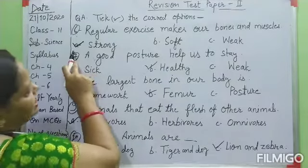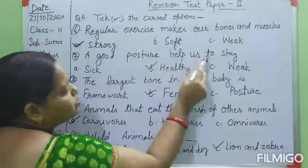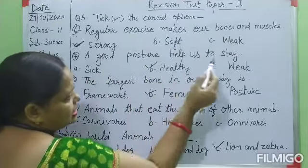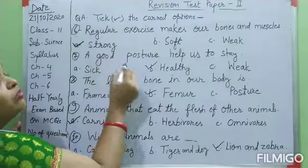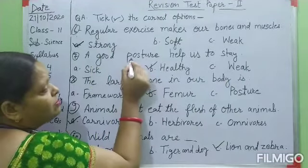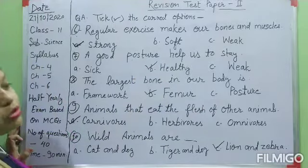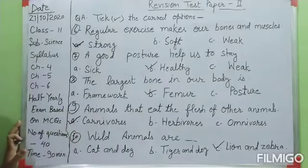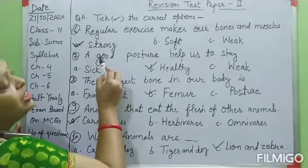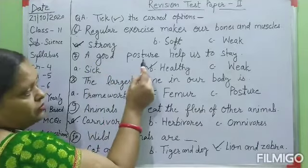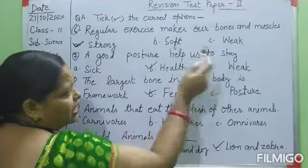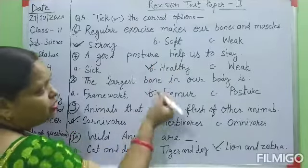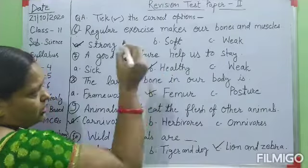Question number seven: good posture helps us to stay — A: sick, B: healthy, C: weak. What is the meaning of 'posture'? Posture is the position when we are running, walking, reading, or sitting — it is a proper position. When our posture is good, it helps our body stay healthy. Your right option is B — healthy. You have to choose option B.